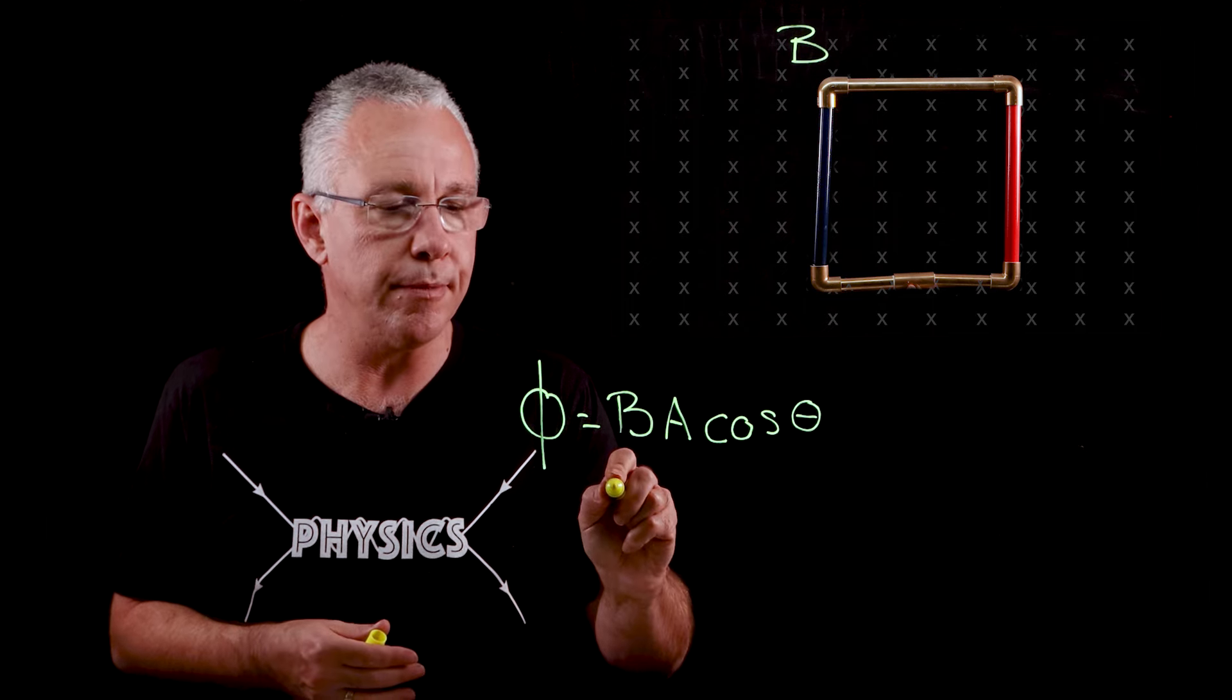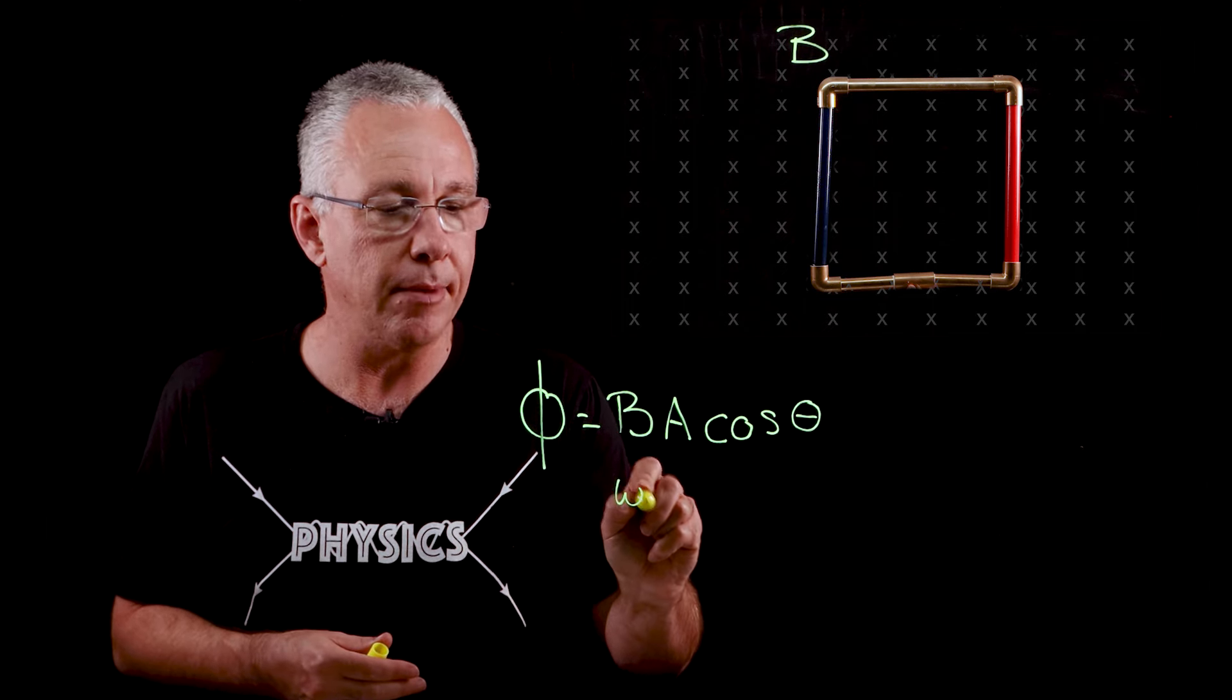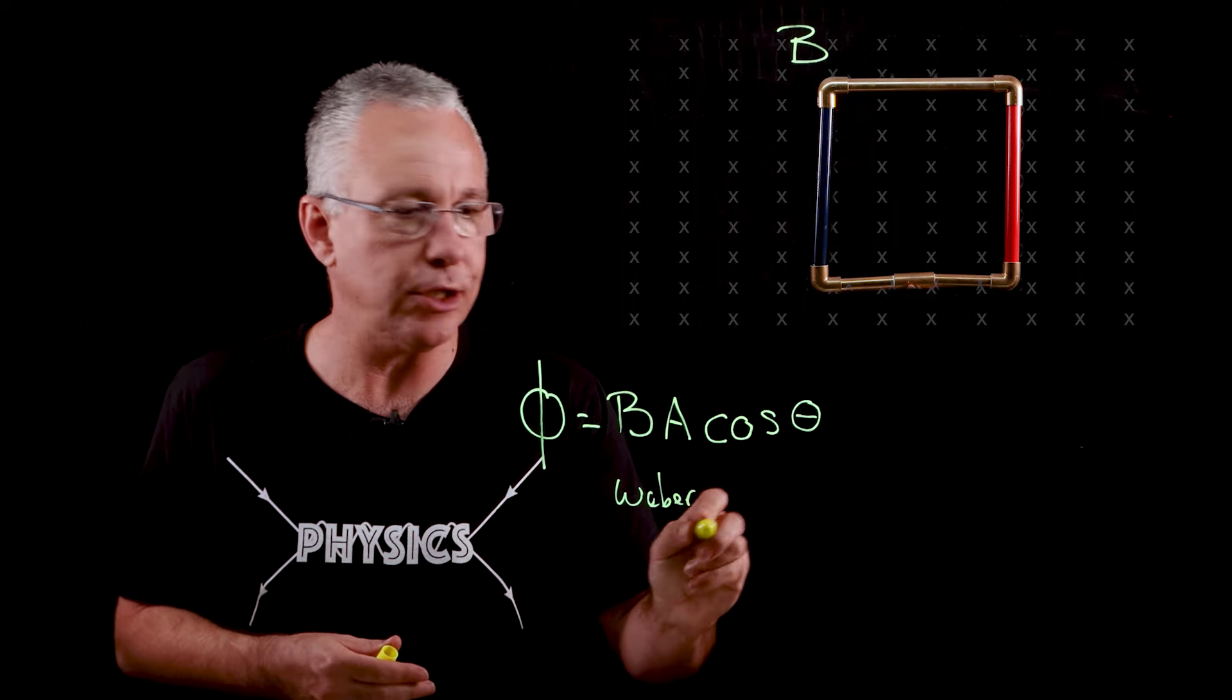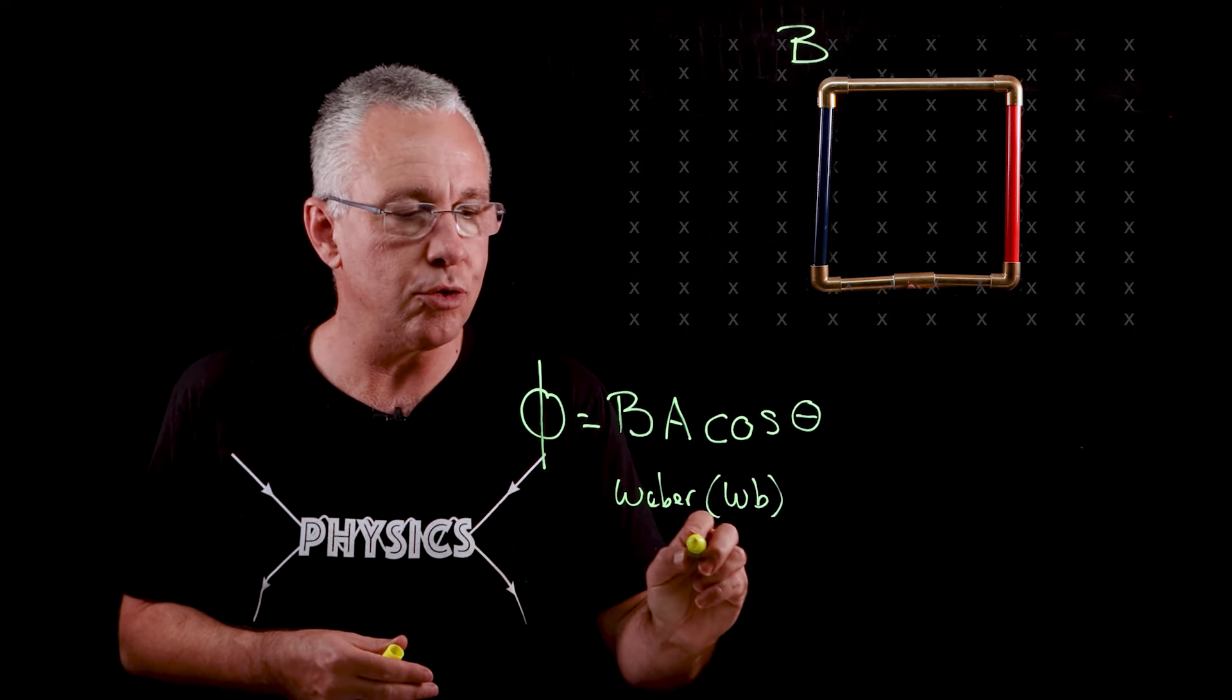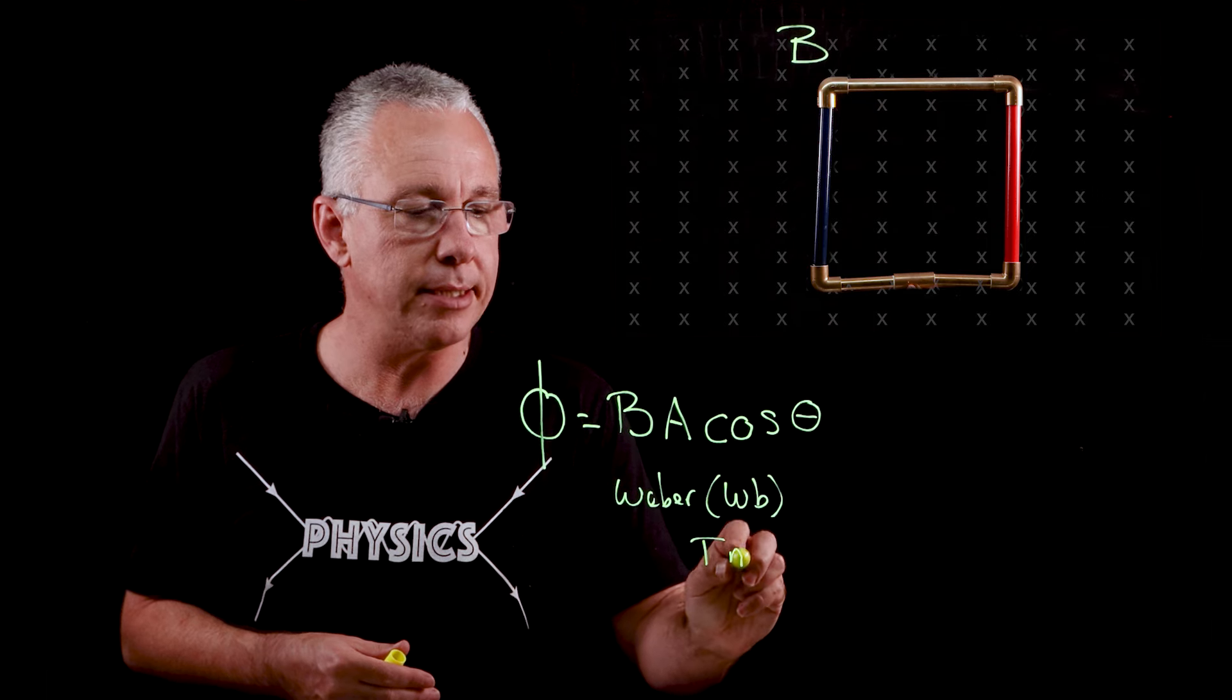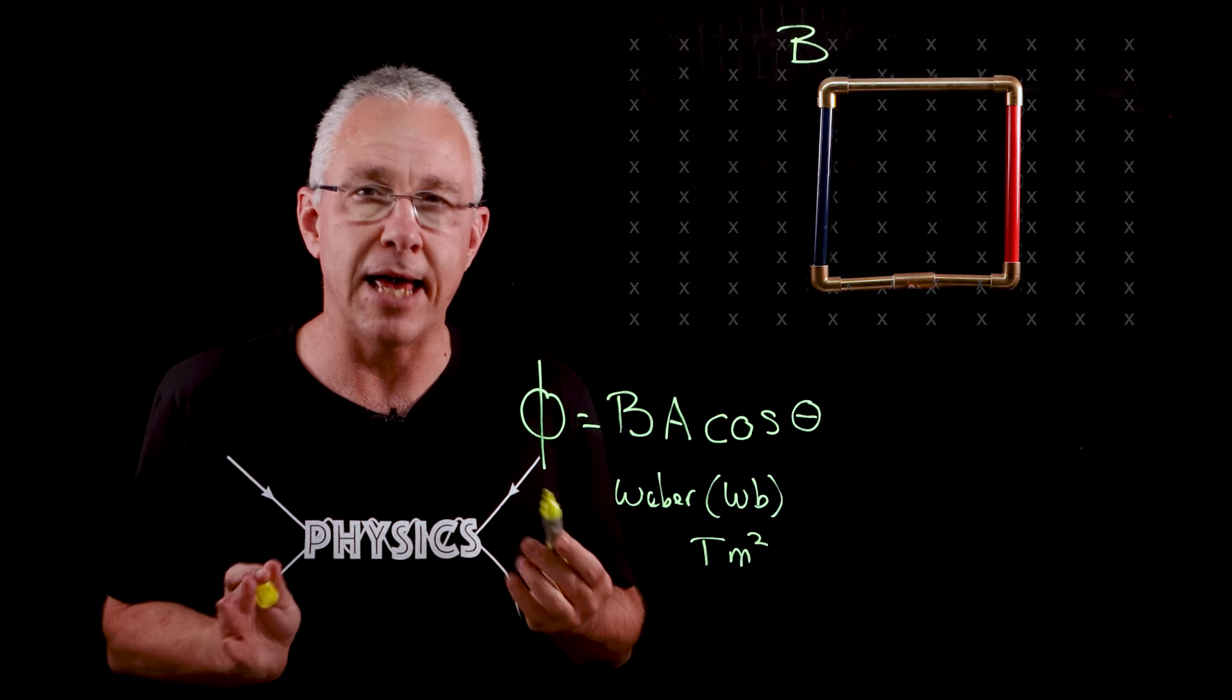But finally, the unit we use for the flux is the weber. And no, not the barbecue. It has symbol Wb and it is equivalent to saying tesla meters squared. That's magnetic flux.